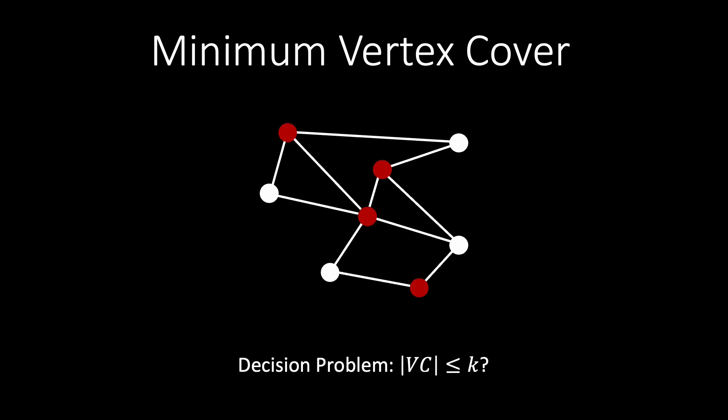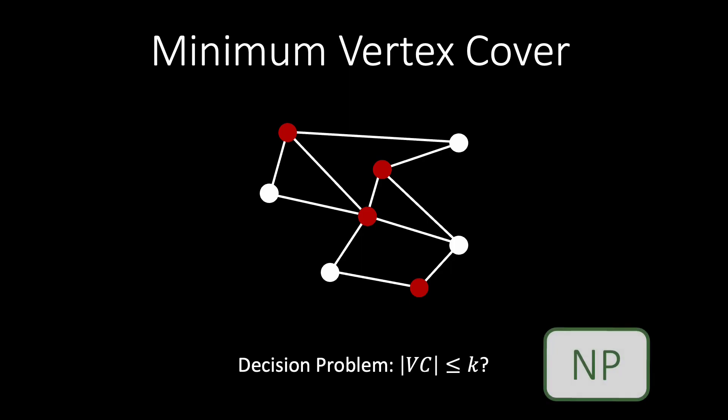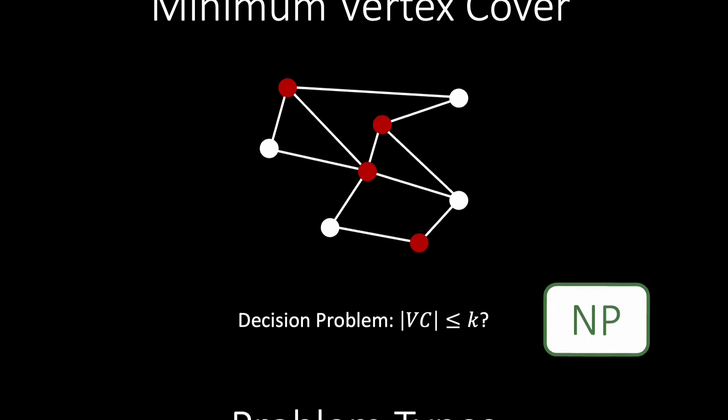On the other hand, once we showed you the vertex cover of size 4, it was probably easy to verify that it is indeed a valid vertex cover. However, this property of easily verifying a solution is so important that it has a name: NP.